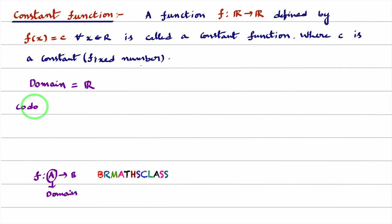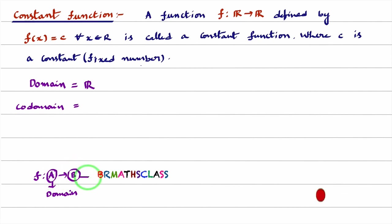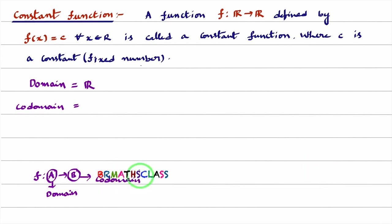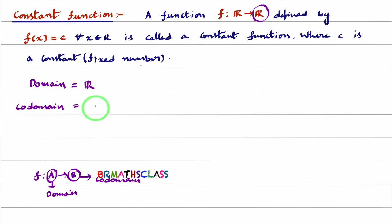What about the codomain of this function? In the definition of codomain, we know that if f from A to B is a function, then set B is called the codomain. Here, f is a function from the set of all real numbers to real numbers. So the codomain of this function is also the set of all real numbers.